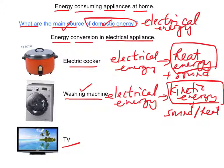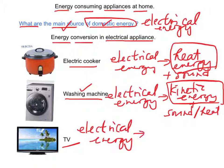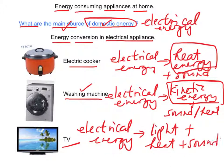For a TV, it also turns electrical energy into light, heat, and sound energy. The useful output energy is light and sound.